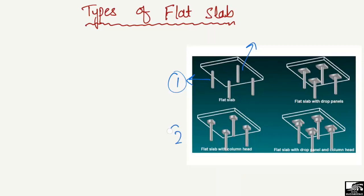The second one is the flat slab with the column head, where we increase the depth or the thickness of the column only in the region where there is a connection between the slab and the column. Here we have increased the size of the column — this is the flat slab with column head. The third type is the flat slab with the drop panel, where we increase the thickness of the slab only in the region of the connection between the slab and the column.